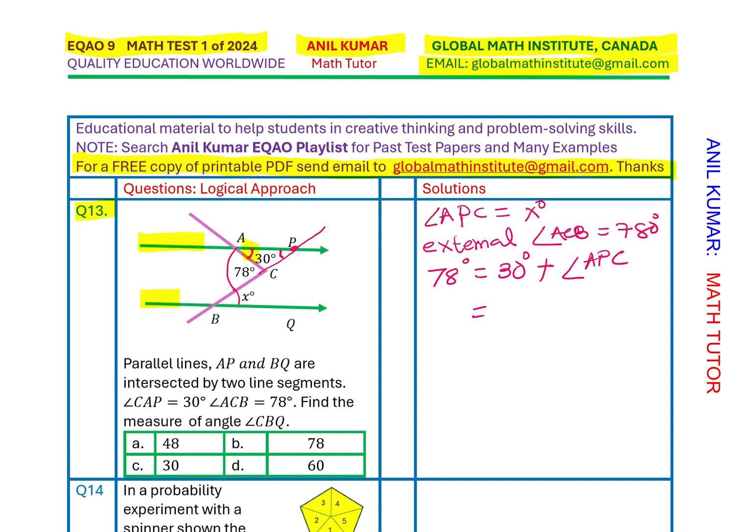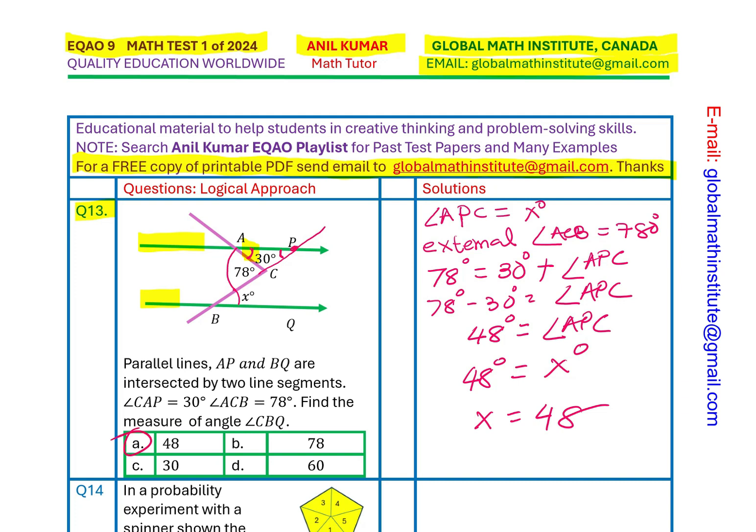So, from here, we can find what angle APC is. It is the difference of 78 and 30. So, let us rewrite. We get 78 degrees minus 30 degrees equals to angle APC, which is 48 degrees. And since we know that APC is also same as X degrees, so X is equal to 48.